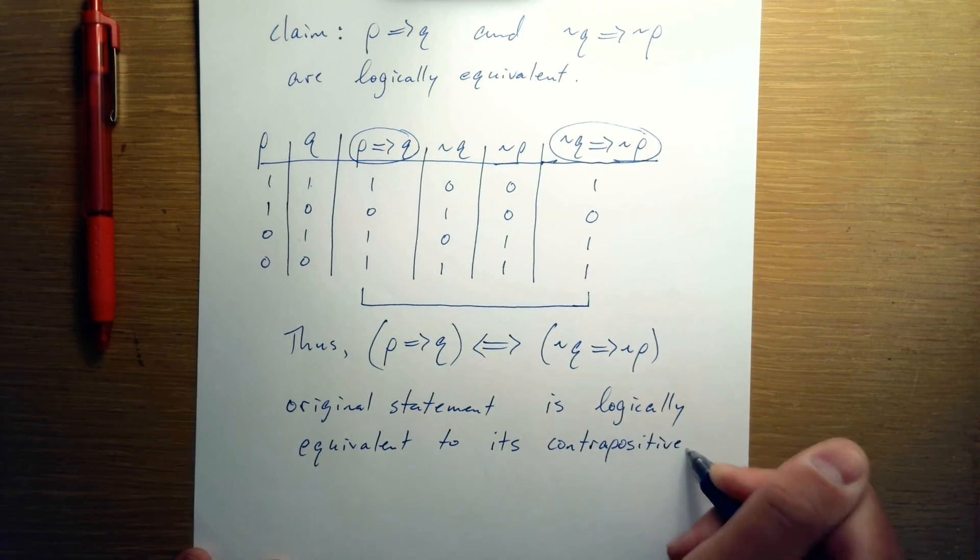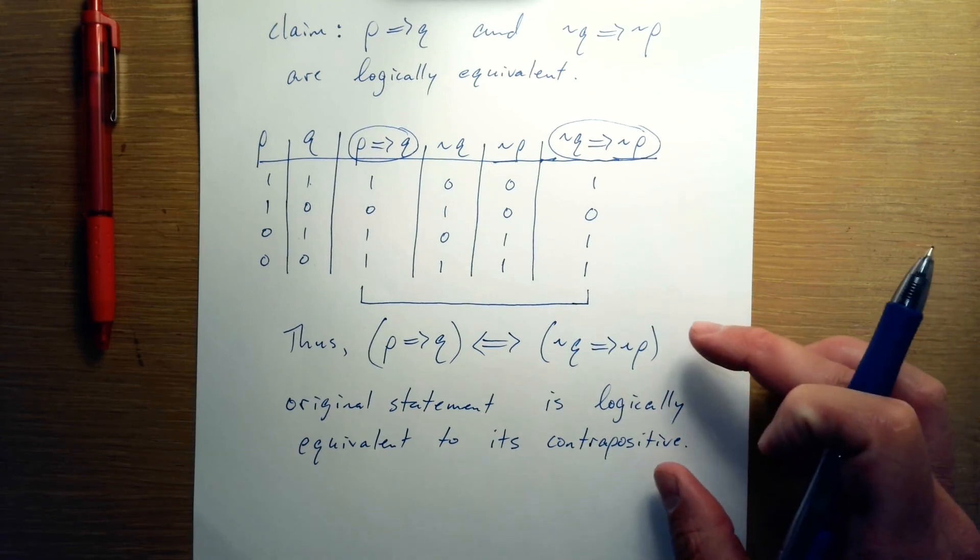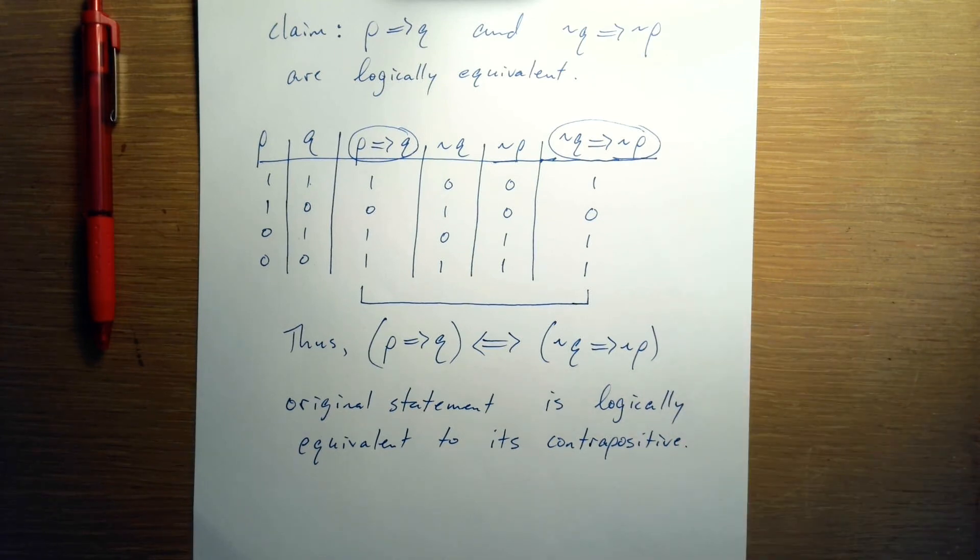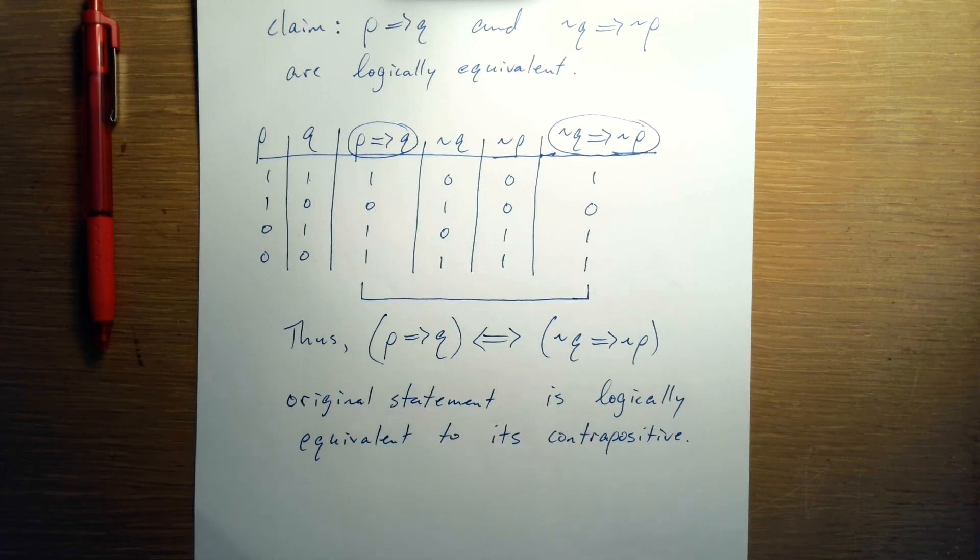And this seems like a fairly esoteric result, but this is very powerful when you're trying to prove things in mathematics or when you're trying to manipulate logical symbols or statements. Because now, since they're equivalent, you can use them interchangeably. Just like in algebra, you can do substitution. And in logic, you can also substitute these in freely because they have the same truth values.